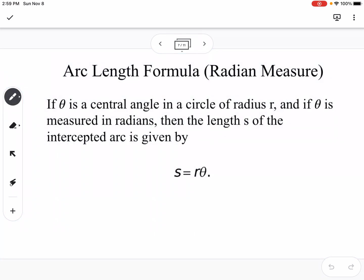So arc length formula. There's 2 arc length formulas that we're going to look at. This one is if you're using radians. So if θ is a central angle in a circle of radius r, and if θ is measured in radians, then we can find the length of an intercepted arc. So here's your angle. So if this is θ, this is r, this would be s, the distance between where your angle intercepts the circle.